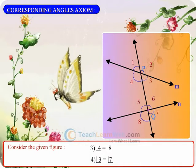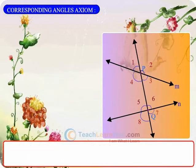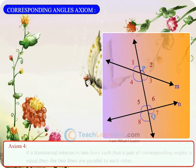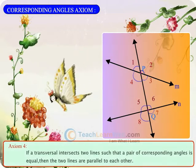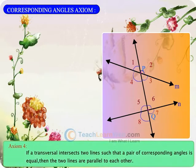Similarly, the converse of above axiom is also true. Axiom 4: If a transversal intersects two lines such that a pair of corresponding angles is equal, then the two lines are parallel to each other.